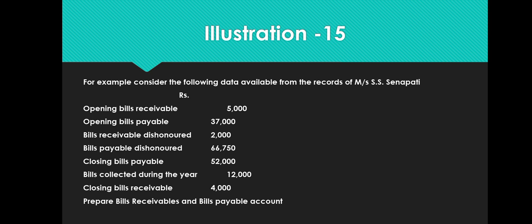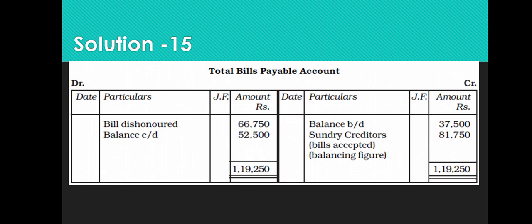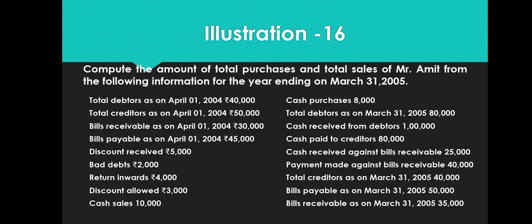Illustration: Opening bills receivable, opening bills payable, bills dishonoured, bills payable dishonoured, closing bills payable, bills collected during the year, and closing bills receivable are given. Bills receivable account and bills payable account are both prepared with items posted as per journal entry logic. The balancing figures give the missing amounts. You do not need to memorise the format — just remember the journal entries and post accordingly.